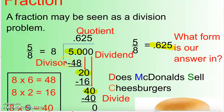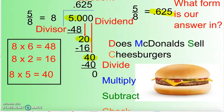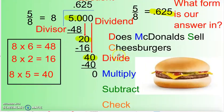So what happens is we try to figure out how many times 8 is going to go into 5. Unfortunately, 8 does not go into 5 because 5 is a smaller number. We're going to use this method — it's called Does McDonald's Sell Cheeseburgers. The D stands for Divide, M stands for Multiply, S stands for Subtract, and C stands for Check.